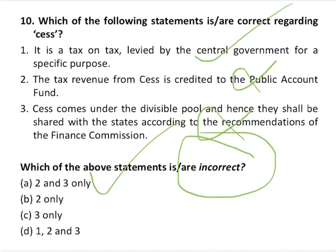A cess is imposed by the central government as a tax on tax levied for a specific purpose. It is expected to be levied until the government collects enough money for that purpose. Cess differs from usual taxes like excise duty and personal income tax as it is an additional tax on top of existing taxes. Revenue from main taxes is kept in the Consolidated Fund of India and can be used for any purpose, but cess revenue is first credited to the Consolidated Fund and then utilized by Parliament's appropriation for the specified purpose. That's all for today — I hope you liked the class. Please like and subscribe to our channel for more such videos. Thank you.